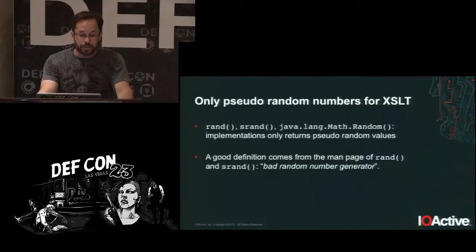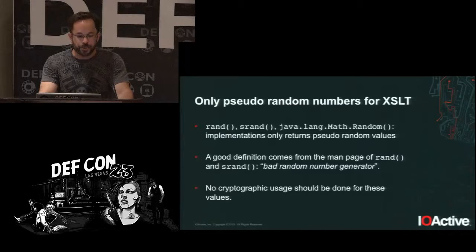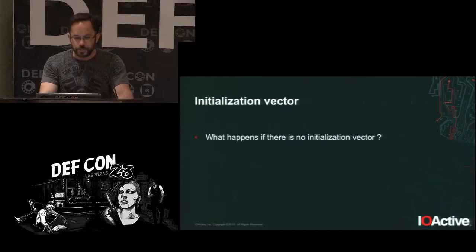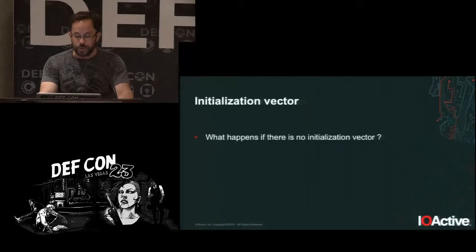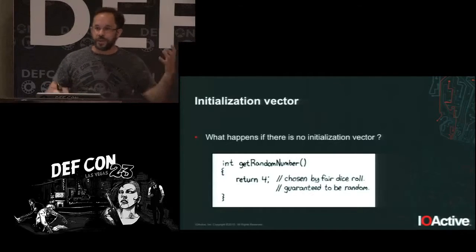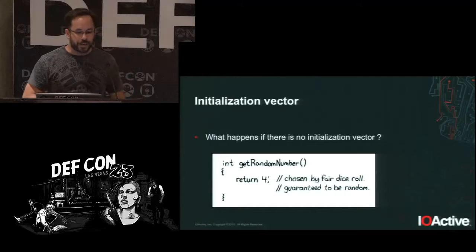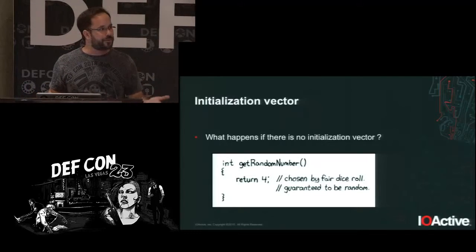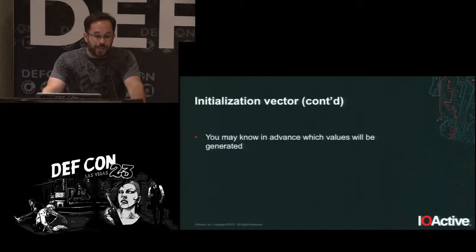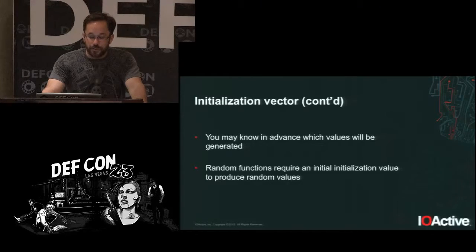The man page for these C/C++ and Java functions confirms they are basic random number generators and should not be used for cryptographic purposes. Beyond that, there is another critical issue: what happens if there is no initialization vector? Without an IV, you may always get the same value, which is not useful if you are expecting a random number — and you may know in advance which numbers will be generated.